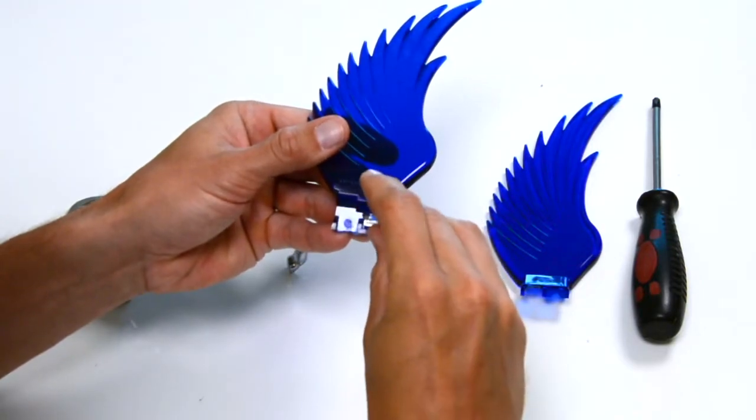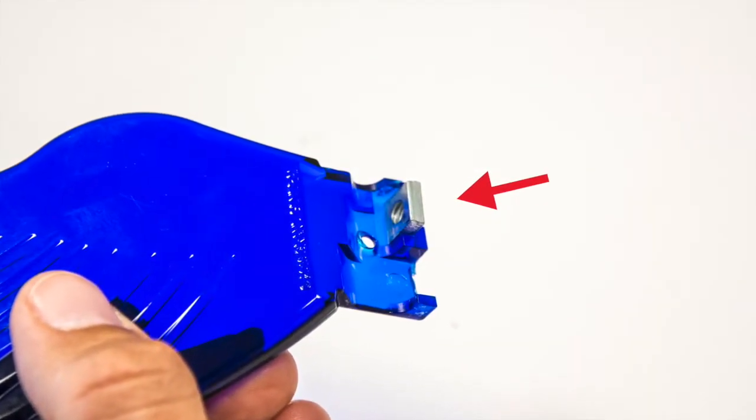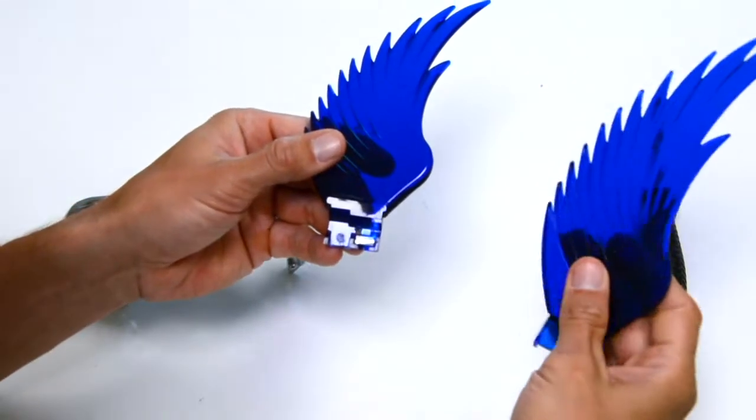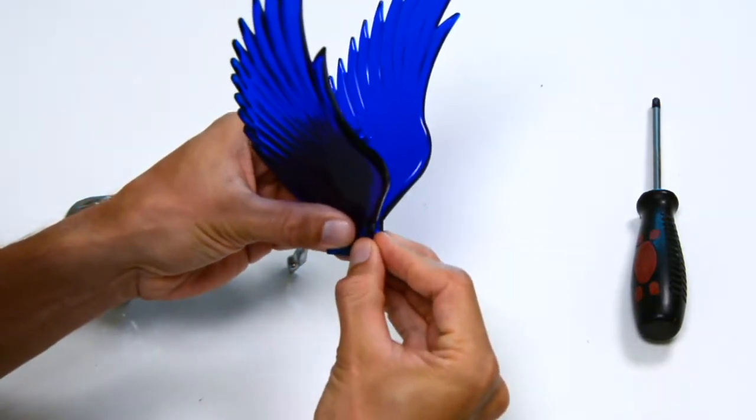Insert square nut into base of the wing. Using your other hand, hold both wings together while maintaining wings and nut in a steady position.